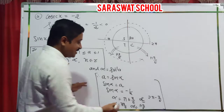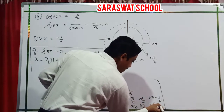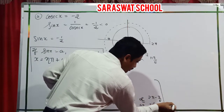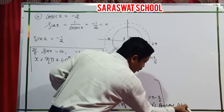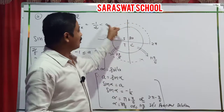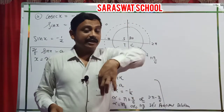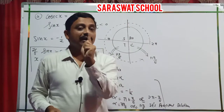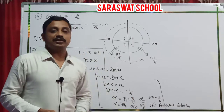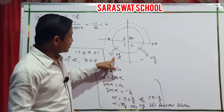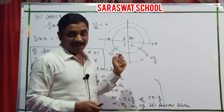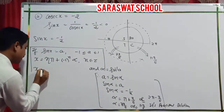These two are our principal solutions. Principal means the angle belonging to one rotation, either anticlockwise or clockwise. The least angle is 7 pi by 6. For the general solution, I apply: x equals n pi plus minus 1 raised to n into 7 pi by 6, where n belongs to Z.